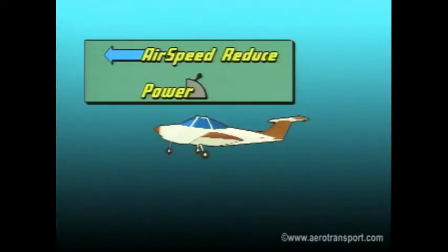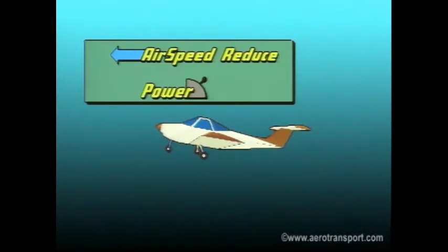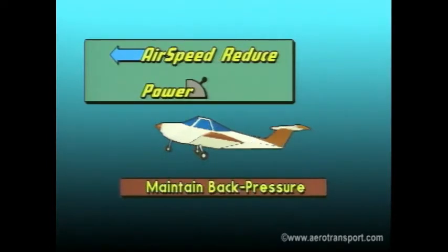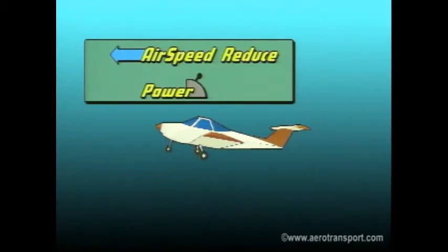If you want to reduce airspeed while in straight and level flight, decrease your RPMs smoothly. At the same time, apply enough back pressure on the control column to maintain your altitude. You must keep the wings level. You will notice that as airspeed decreases, the need for greater back pressure on the column increases. Once you reach the desired airspeed, adjust the power setting as necessary.